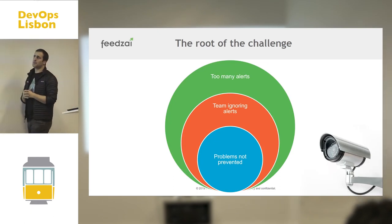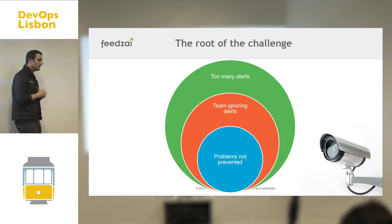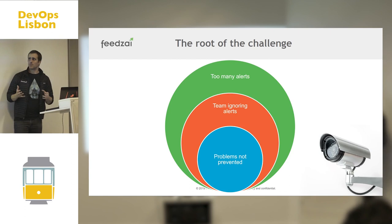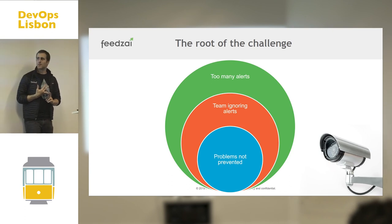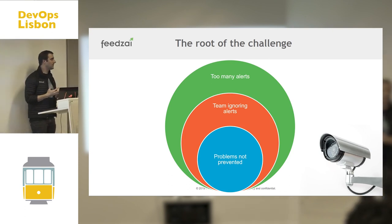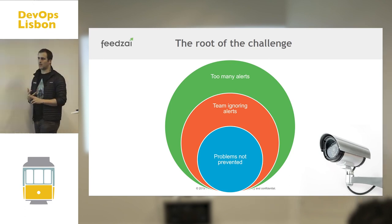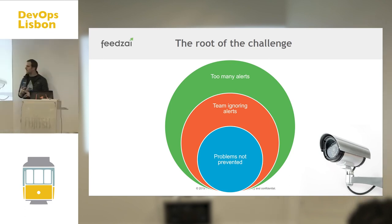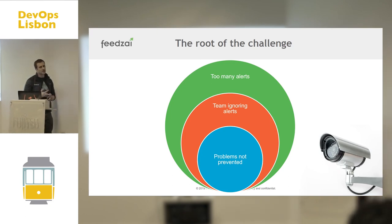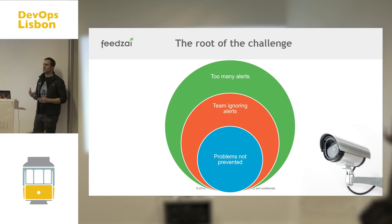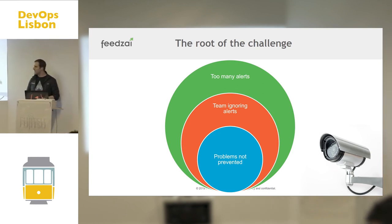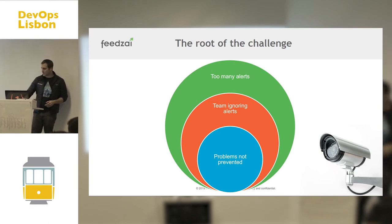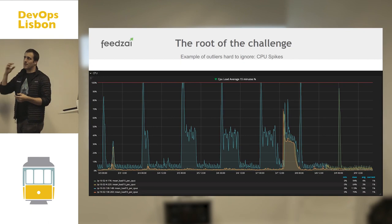On the challenge of monitoring: in short, the problem is too many alerts, and in some cases too few, because we might miss some challenges. This creates an effect where the team starts to ignore alerts. If you get alerts on your mobile every five minutes — sometimes 10 or 20 during the night — and not all of them are real problems, you start ignoring them. In the end, you don't get the problems prevented.